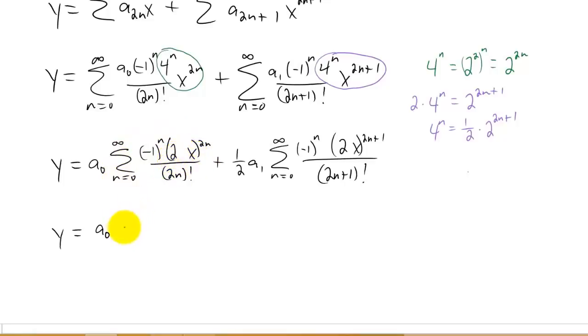You can go to your list of Maclaurin series and you'll realize that this is just a cosine series with 2x replacing x. So this first series is just a cosine of 2x. The second series looks just like a sine of 2x. That's the solution to your differential equation and we did all of that using power series.